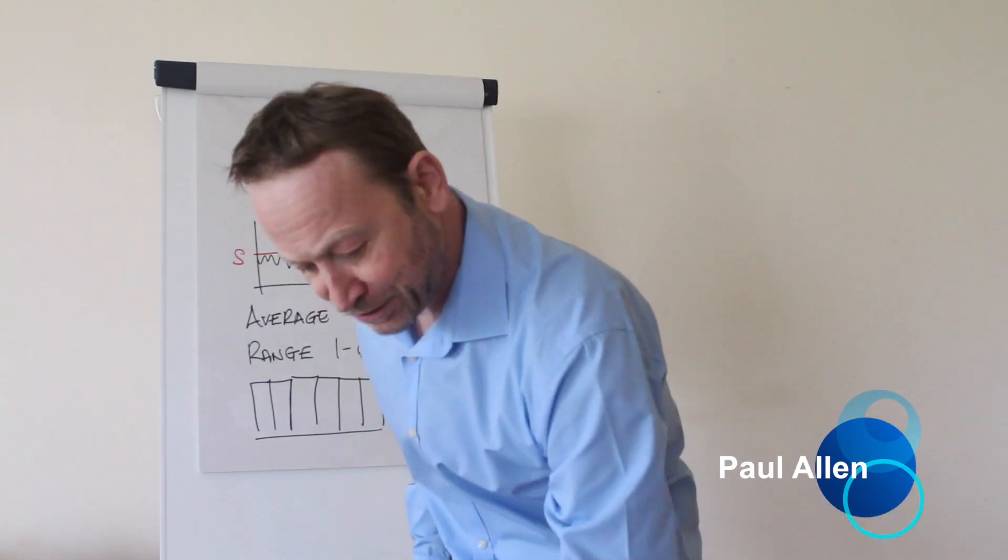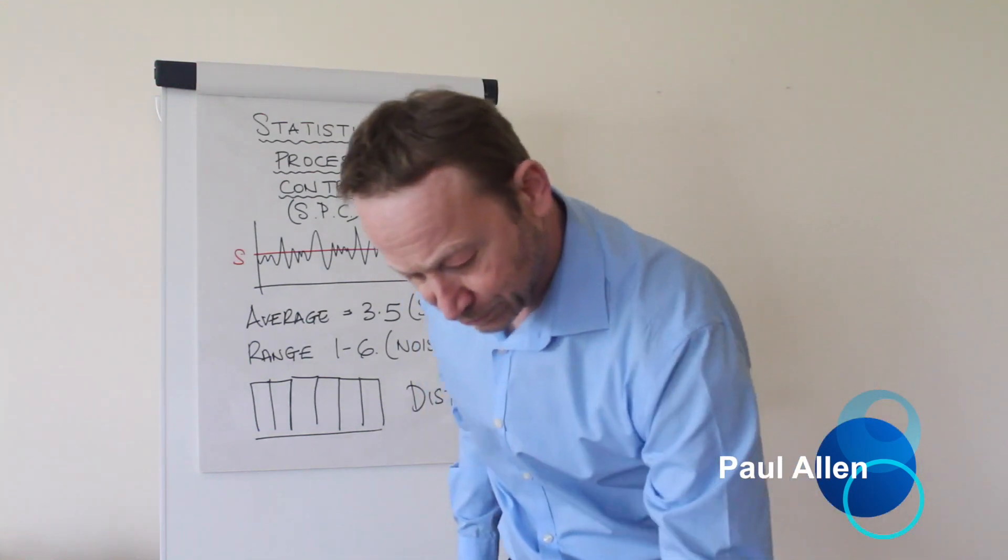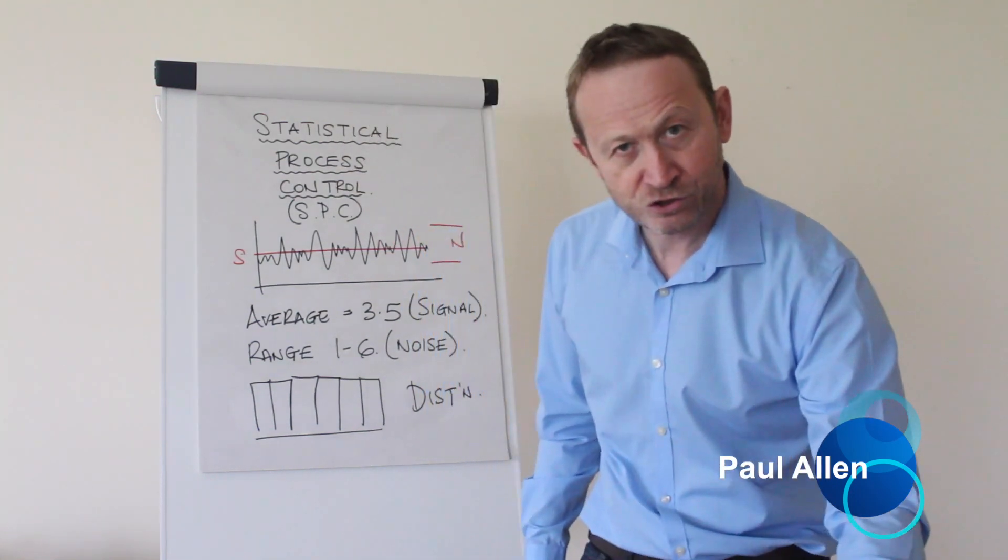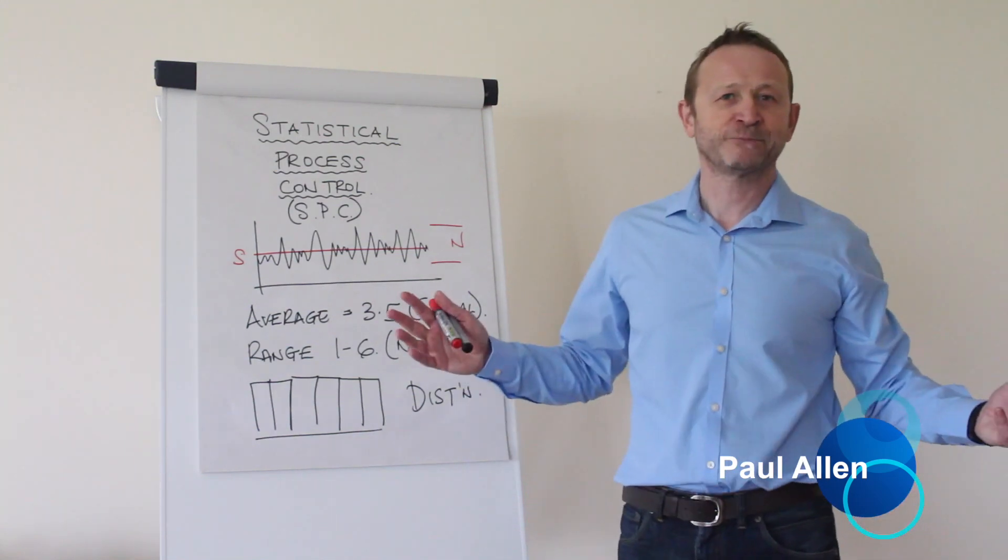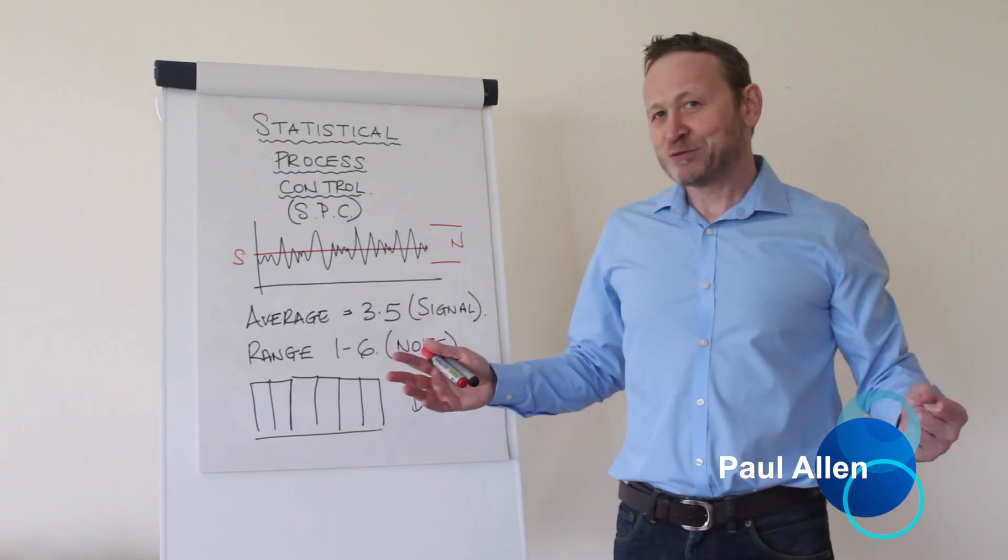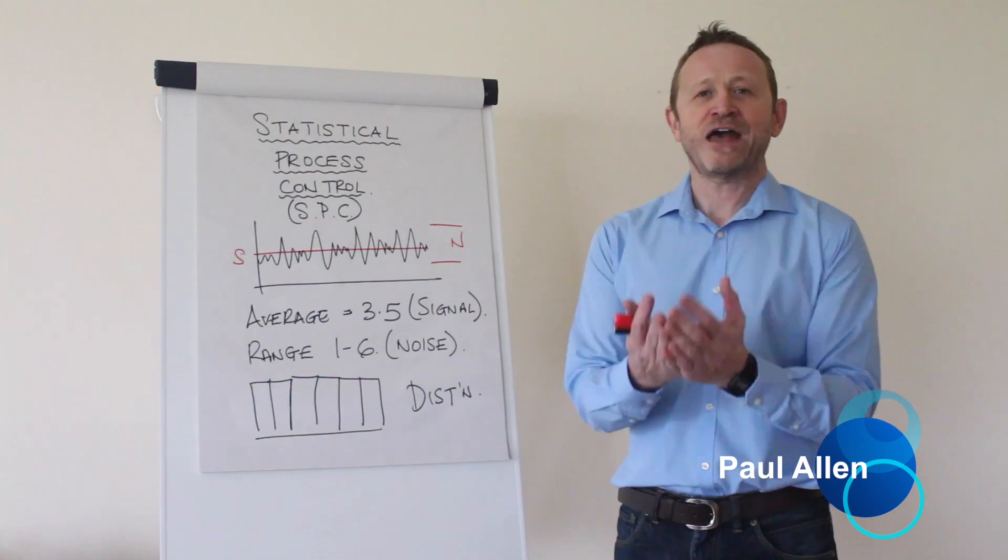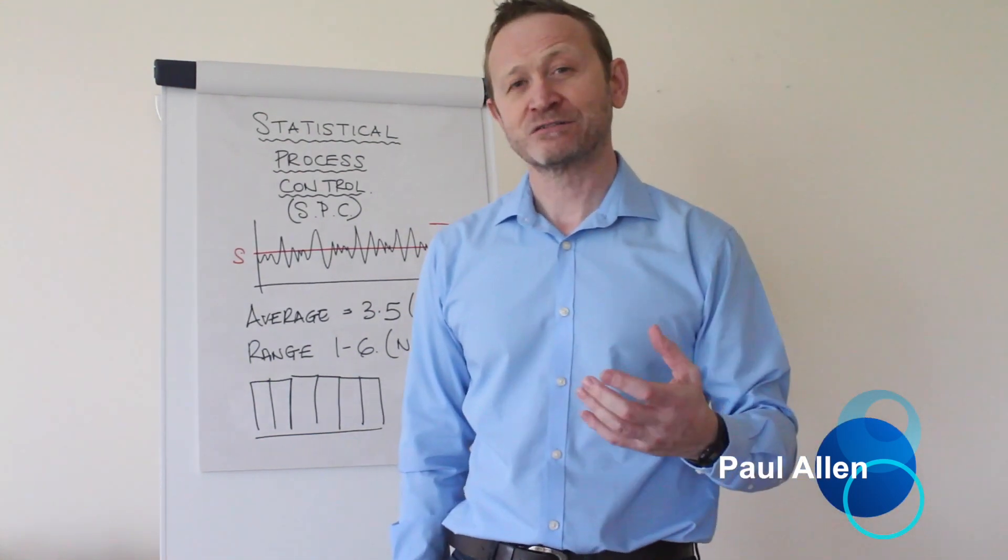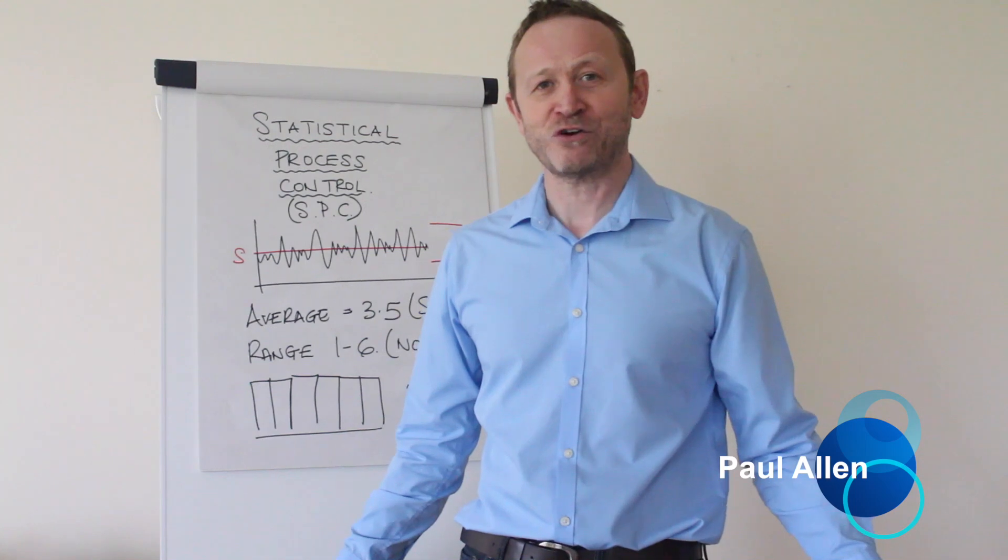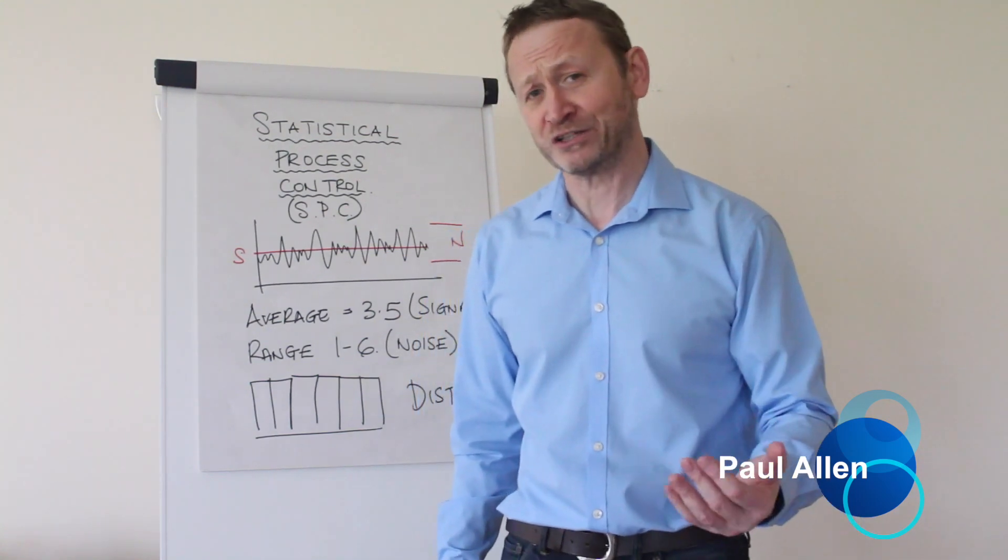This isn't what this process does. It isn't what this random number generator does. If I pick the dice up and I did this, 2, 2, 2, 2. That's not what this random number generator does, is it? Something's wrong. The health of my process is wrong. And that is statistical process control. And that's all it is.